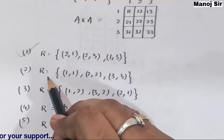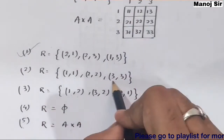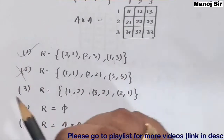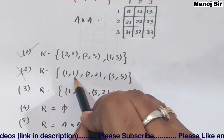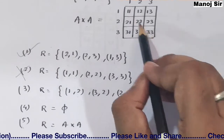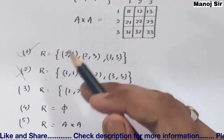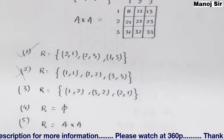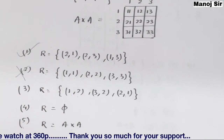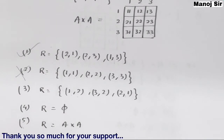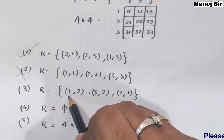Second example: R = {(1,1), (2,2), (3,3)}. All diagonal pairs are present, so this relation is not asymmetric. However, since it contains only diagonal elements, this relation is both a symmetric relation and an anti-symmetric relation.